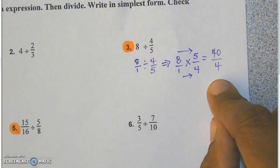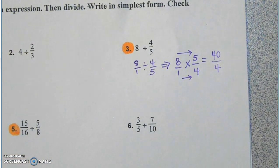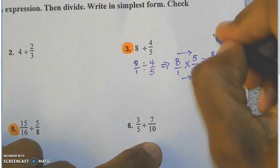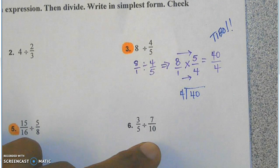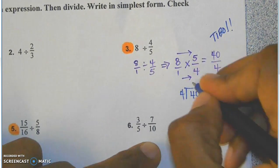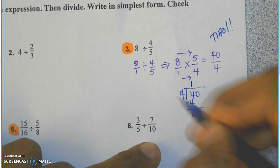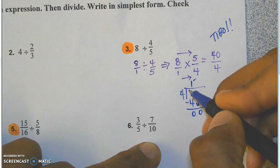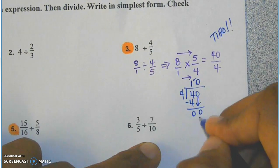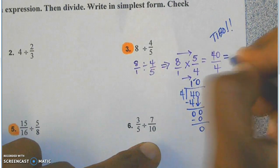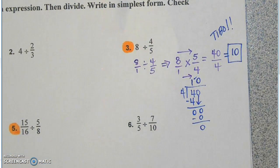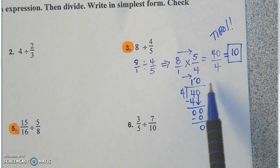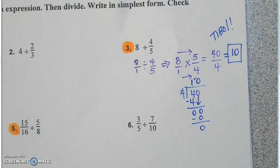If it is an improper fraction we always want to make it a mixed number. We use Tybo — top in, bottom out — we divide. How many groups of four in 40? I say how many groups of four in four: one. Zero is less than four, bring down my zero. How many groups of four in zero? Zero. Zero times four is zero, nothing left to bring down. My answer is ten. If you don't have a remainder then you don't have a mixed number — you just have a whole number answer. So don't try to make it fit. If there's no remainder, it's just a whole number answer.